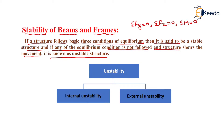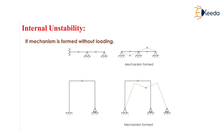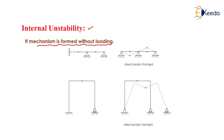We have bifurcated instability into two parts: internal instability and external instability. What do you mean by internal instability? If a mechanism is formed without loading, then the structure is said to be internally unstable.